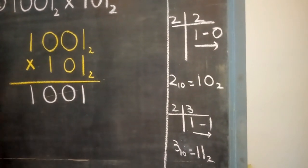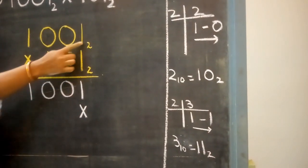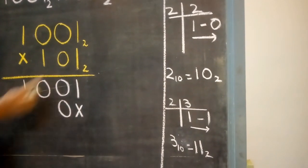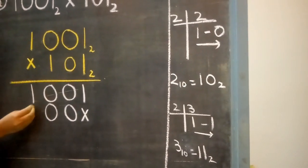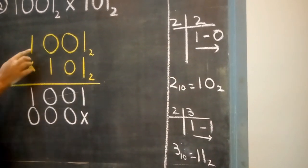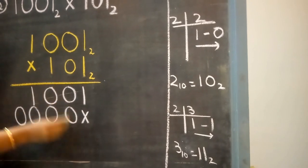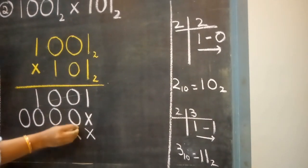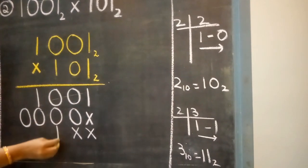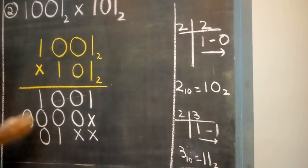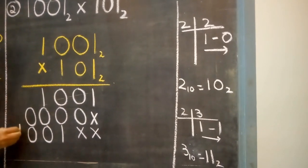Now we will multiply our second digit 0. So we will put a cross below our first digit. 0 zeros are 0, 0 zeros are 0, 0 ones are 0. Now we will multiply the third digit. So we will put two crosses and we will start from the third place. 1 into 1 is 1, 1 zeros are 0, 1 zeros are 0, 1 into 1 is 1.